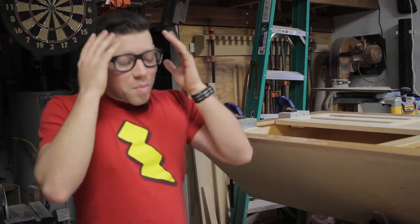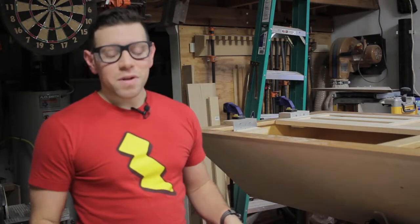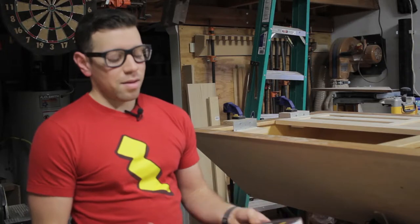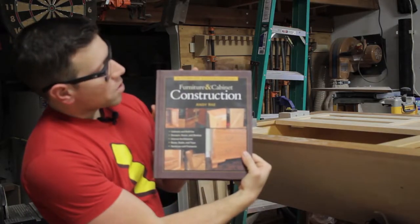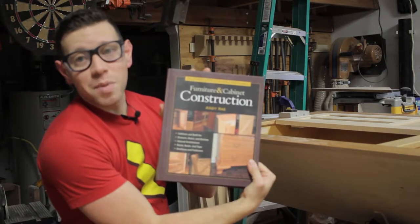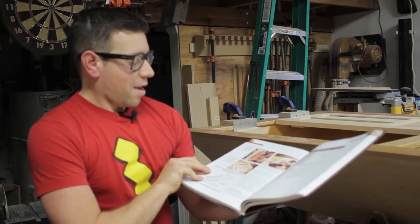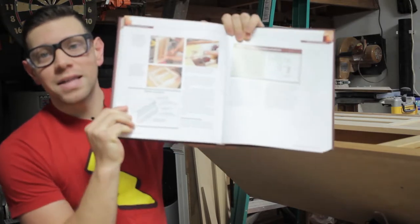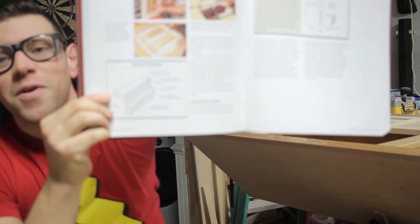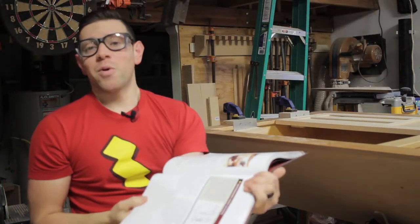While I was pondering this problem into the wee hours of the night, I stumbled upon this little gem in my Furniture and Cabinet Construction by Andy Ray book, because I'm a nerd. In there is a jig for a door hanger. I don't know if you can see that. Almost, out of focus, okay. So you just have to take my word for it then.